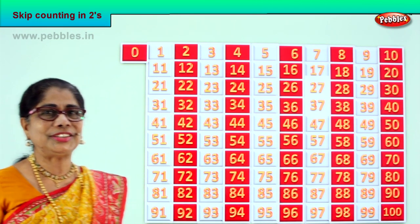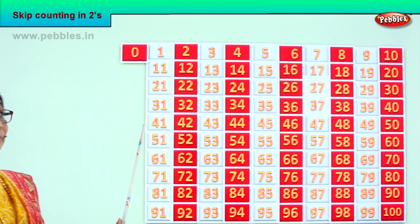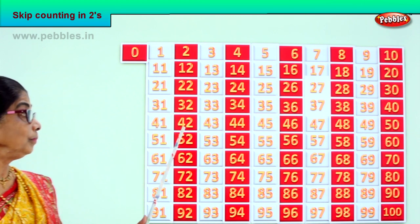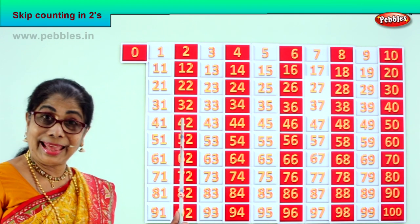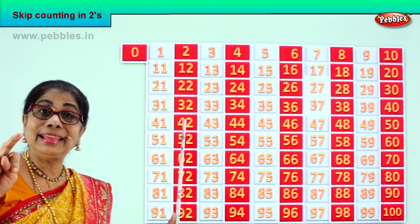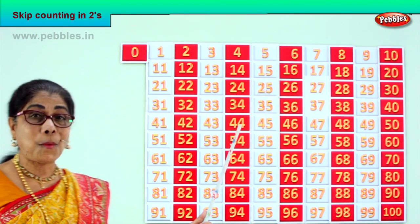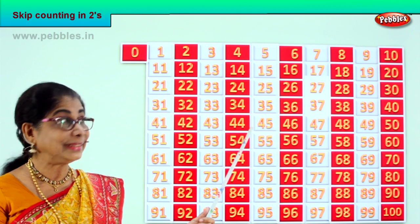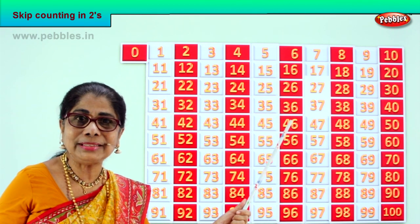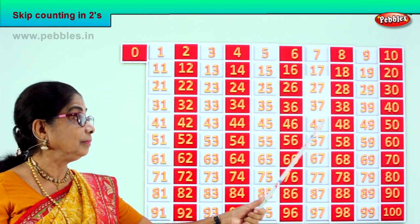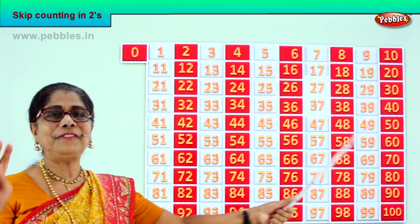Good. Let's count on. After forty: forty-one, forty-two. After forty-two: forty-three, forty-four. After forty-four: forty-five, forty-six. After forty-six: forty-seven, forty-eight. After forty-eight: forty-nine, fifty.